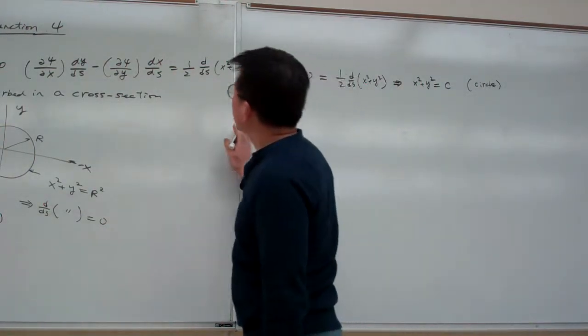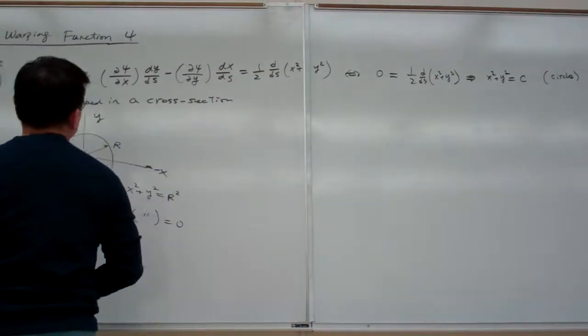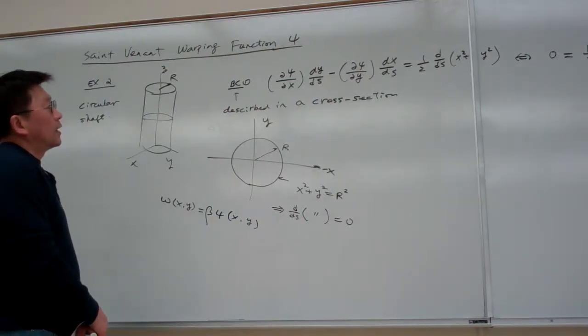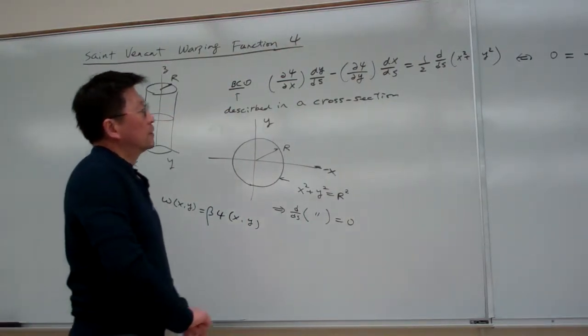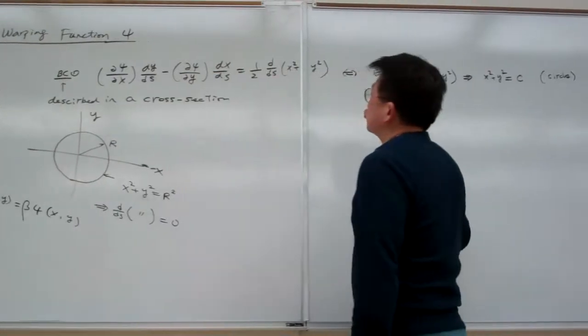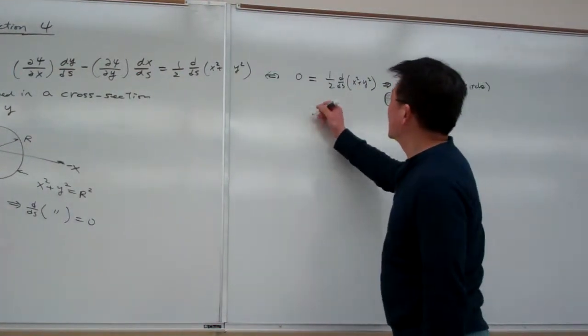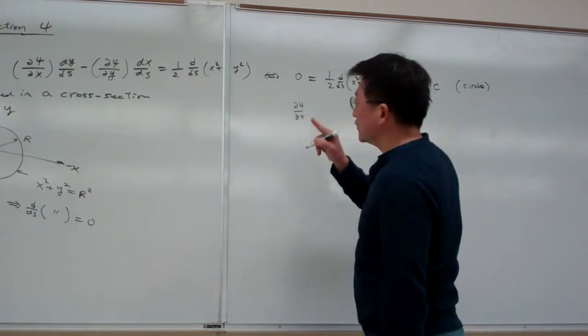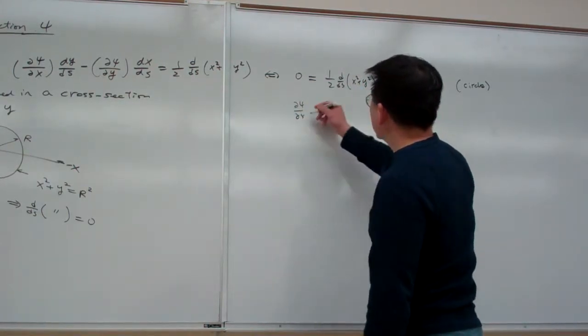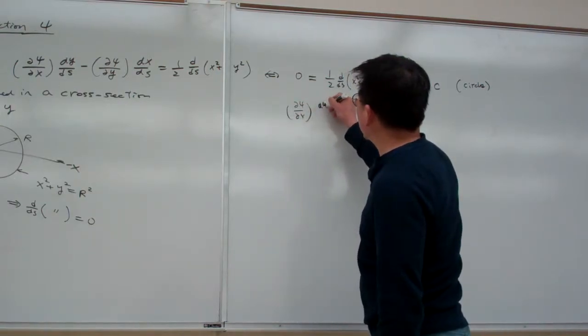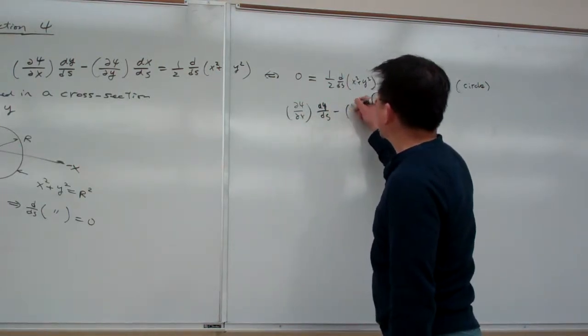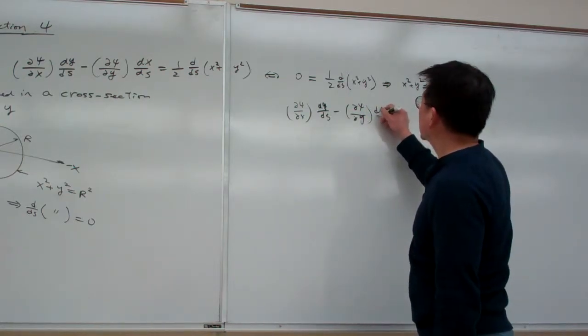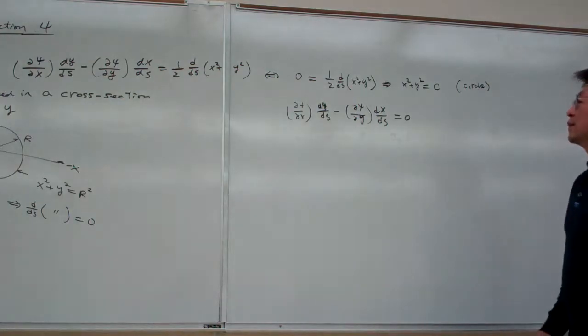From this point onward, we deduce the profile of the cross section must be a circle. On the other side, if the profile is a circle, then the boundary conditions become ∂ψ/∂y dy dx minus ∂φ/∂y dx dx equals zero.